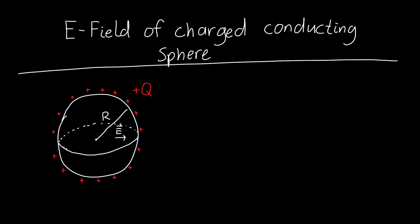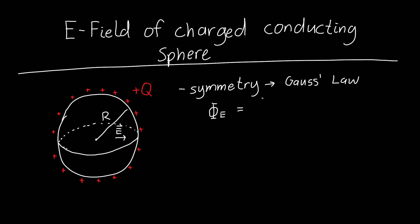This problem has spherical symmetry, which means we can use Gauss's Law to find the electric field. Gauss's Law says that the total electric flux out of a surface is equal to the enclosed charge divided by epsilon — the permittivity — and if it's free space, that's epsilon naught.